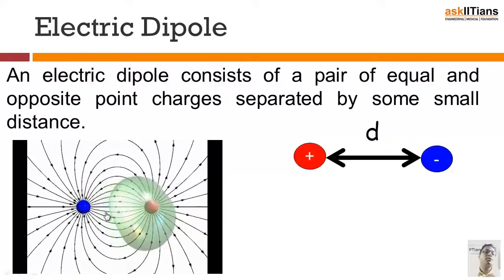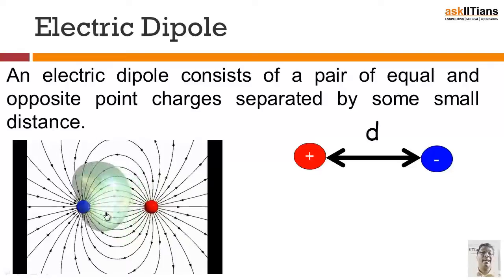From the positive charges you have the field lines that are emanating, and from the negative charges they are ending. This is how a dipole actually exists.